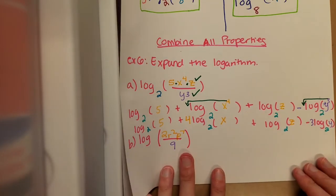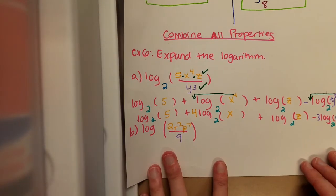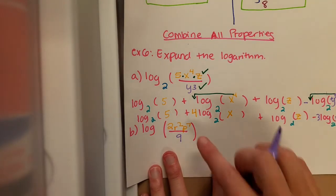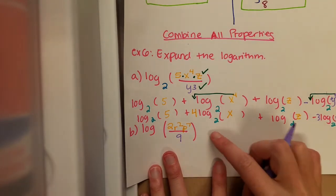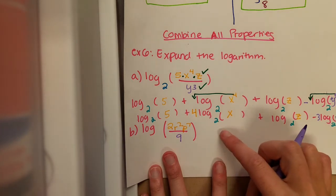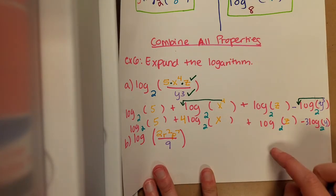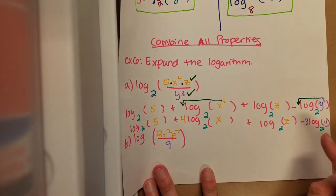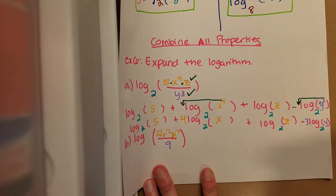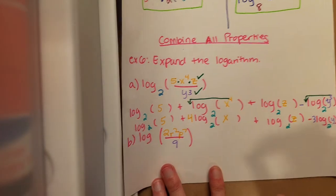And that would be my final answer. So we have log base 2 of 5, plus 4 log base 2 of x, plus log base 2 of z, minus 3 log base 2 of y. And that would be it for that one.